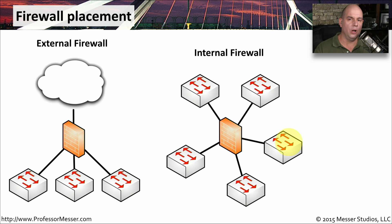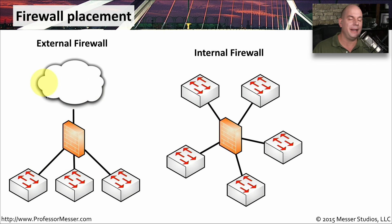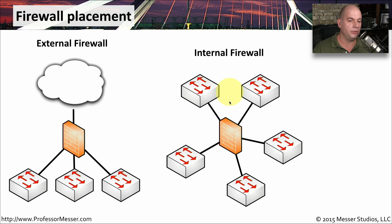Traditionally we put our firewall between the inside of the network and the outside — right in the middle between the inside and the external side where the internet might be. This protects all inside devices from anything on the external network. But we're seeing an increasing number of people wanting a firewall on the inside of their organization, especially in a data center or virtualized environment. You can put the firewall right in the middle so any traffic traversing between different switches goes through the firewall, helping segment off a data center and only allow traffic and applications that should reach those critical devices.